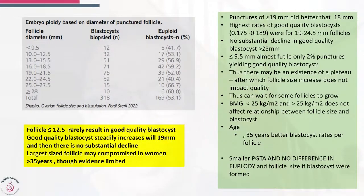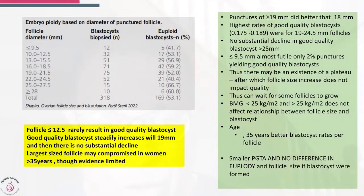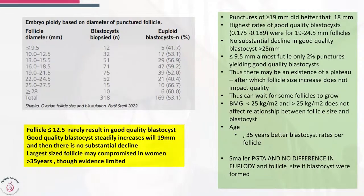We think there may be a plateau, after which follicle size increase does not impact quality — meaning once you cross 18, 19, or 20 millimeters, waiting longer does not seem to compromise quality by causing post-maturity. BMI less than 25 or more than 25 did not have an impact. In younger women, blastocyst quality was much better. When they looked at euploidy, they found no difference whether the blastocyst came from small or larger follicles, which is quite reassuring.